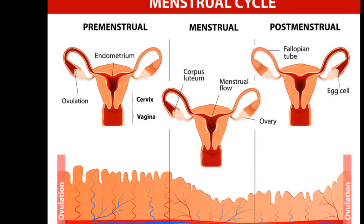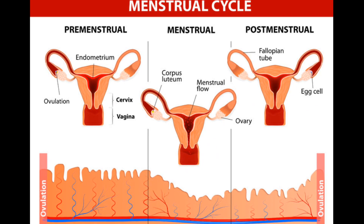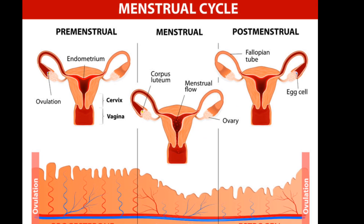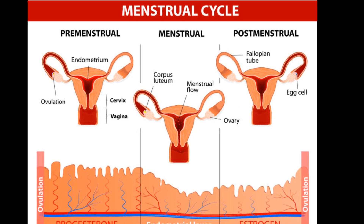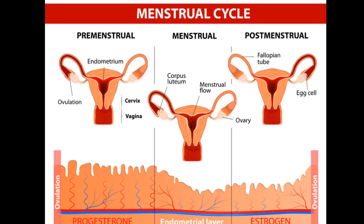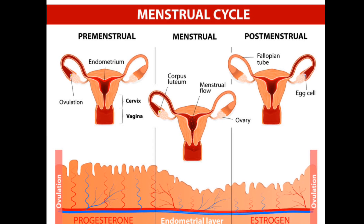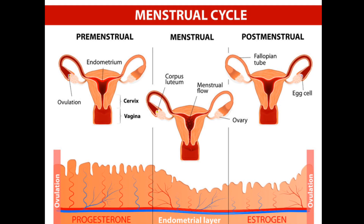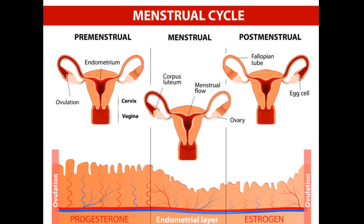Sanitary pads, tampons, underwear, or menstrual cups can be used to absorb the flow. Number 2: the follicular phase.